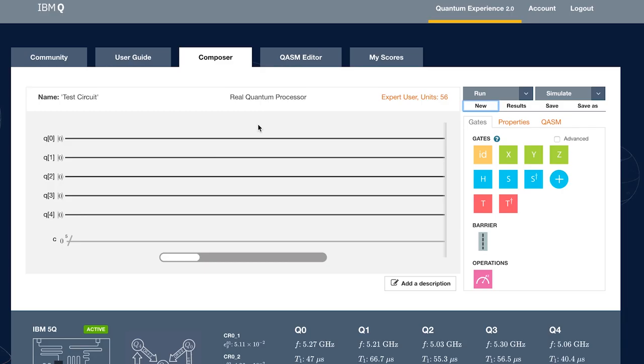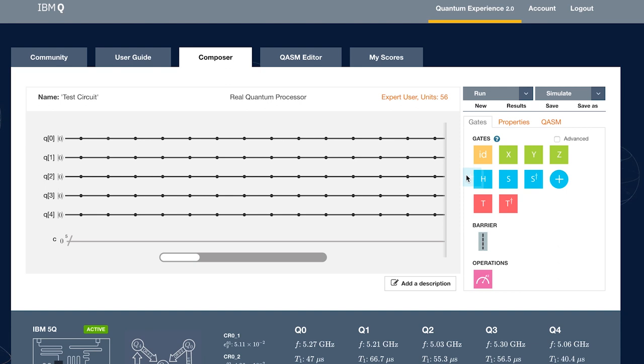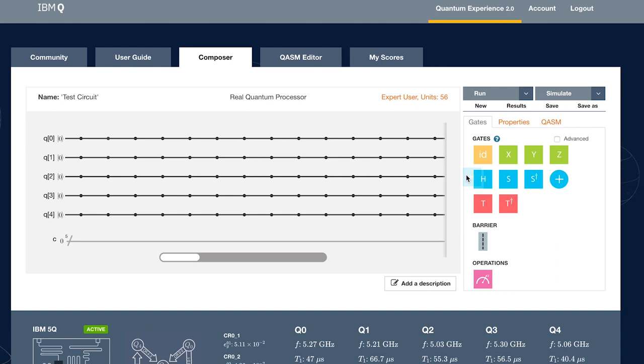First, let's open up the Quantum Experience website. We're going to start a new circuit. Now let's drag over some gates and some measurements. Okay, our circuit's all ready. Let's press run.